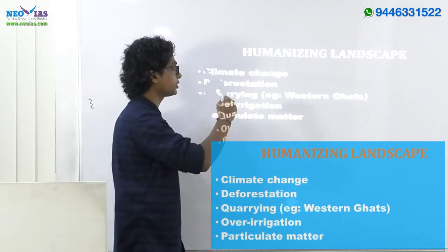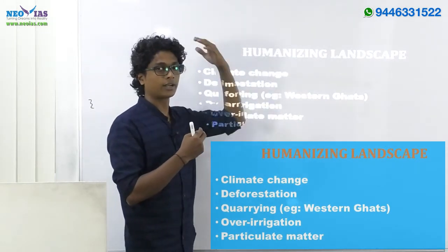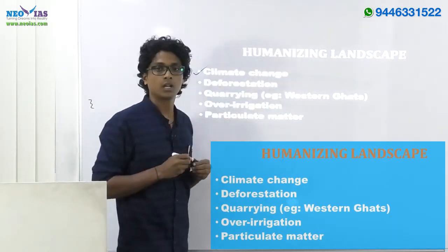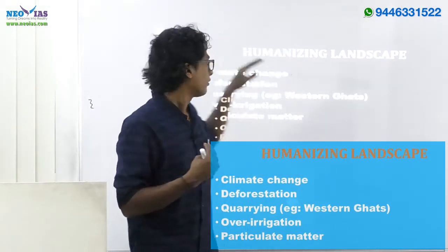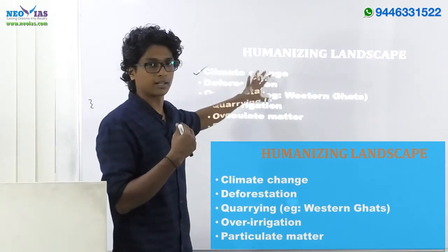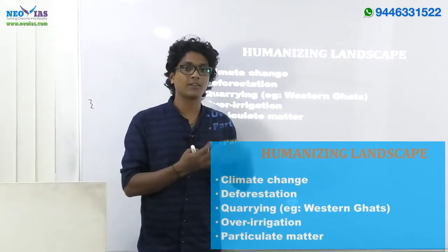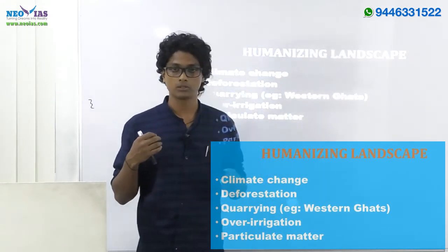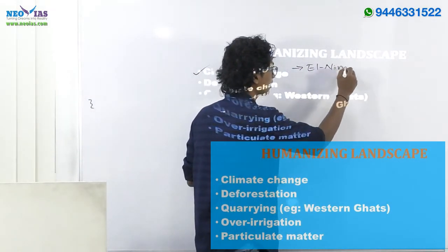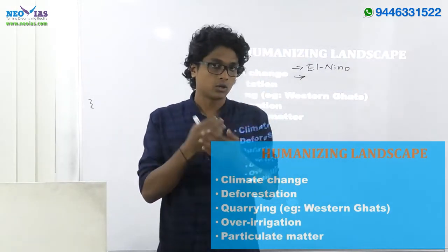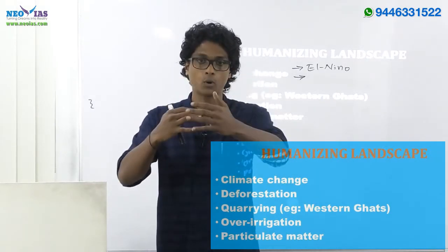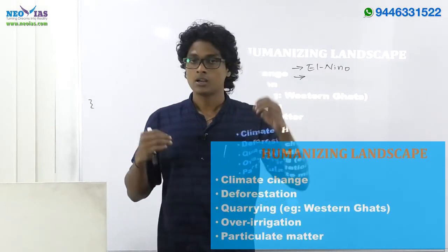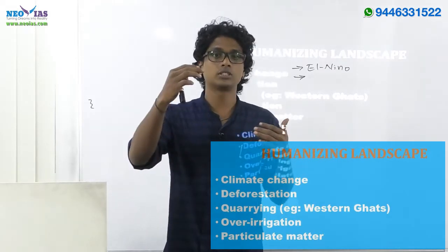There is no doubt that anthropogenic effects are influencing the Indian Monsoon. To substantiate our point, one factor is climate change due to burning of more fossil fuels, resulting in global warming. Due to this climate change, more intensified and frequent weather events like El Niño will occur, which will drastically affect the Indian Monsoon. So El Niño is one point you can interlink here.